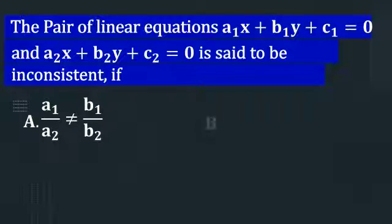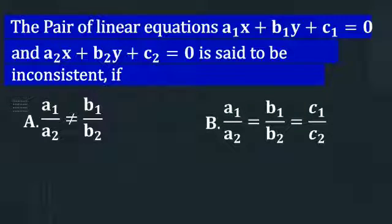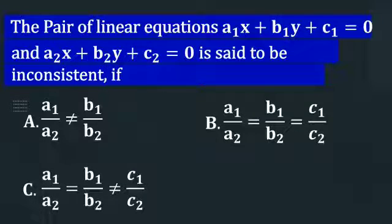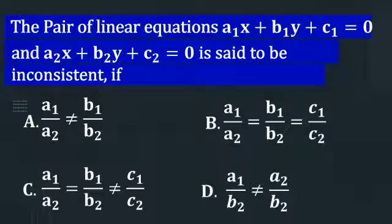Option A: a1 by a2 is not equal to b1 by b2. Option B: a1 by a2 is equal to b1 by b2 is not equal to c1 by c2. Option D: a1 by b2 is not equal to a2 by b2.